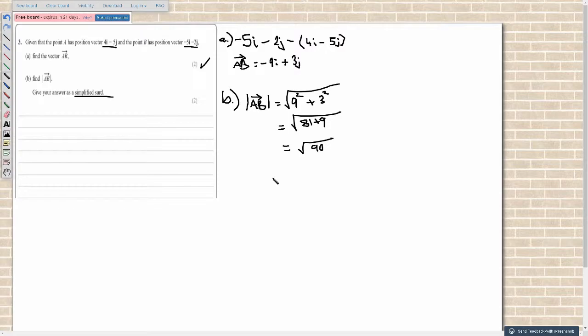Now, we need to give this as a simplified surd. So you've got to think about how we can simplify this surd expression here. So, root 90. Well, the one way I can see we could write this would be root 9 times root 10. That would give me root 90. And then simplify the root 9. Root 9 is just 3. So my final answer, 3 root 10.